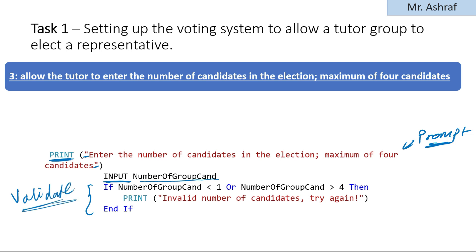You should validate the user input — this is one of the important things for your solution. The tutor might input one, two, three, or four, in which case things go fine. Otherwise, for example if they input five, we validate using an IF condition: if 'number of candidates' is less than one OR greater than four, then PRINT 'Invalid number of candidates, try again.' This is the validation — if the question asks how you validate the number of candidates, you can use this IF condition as your answer.